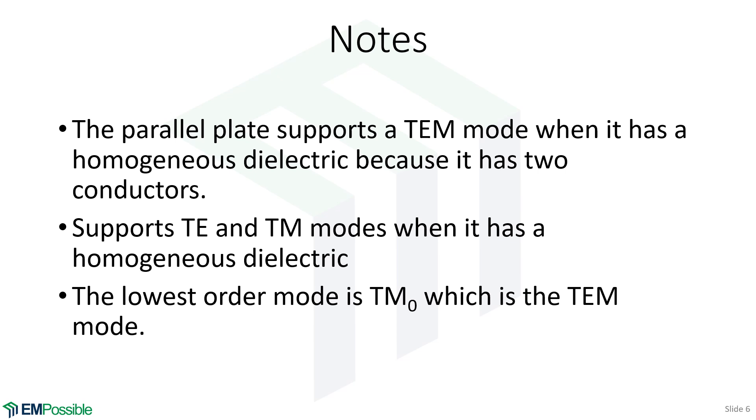Some notes on these. The parallel plate waveguide only supports a TEM mode when it has a homogeneous dielectric. It has two conductors, so it's a transmission line. But if there's some kind of swirly or something in homogeneous dielectric, it does not support a TEM mode. It may support something that comes very close to a TEM mode, and we could get pretty accurate answers if we analyze it that way. But it is not rigorously a TEM mode. Also, when there's a homogeneous fill, it supports TE and TM modes. Those are the higher order modes. The lowest order mode of the parallel plate waveguide is the TM zero mode, which corresponds to the TEM mode of this transmission line, of course, only if it has a homogeneous fill.